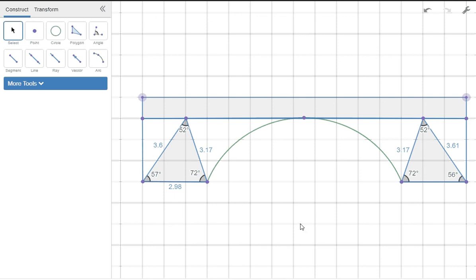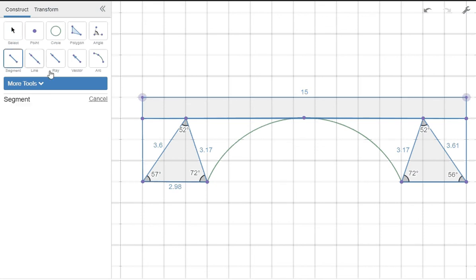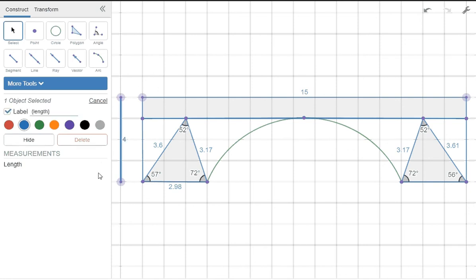Okay, and then finally we want to measure how long is the bridge. So I can click again on the top side of the rectangle, click label, so I know it's 15 units. And I can measure again, click on a segment, so I can measure how high is the bridge, and click again on label. So I'll measure the height. So the length is 15 and the height is 4.